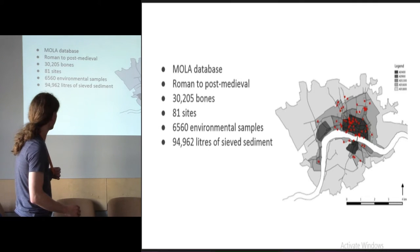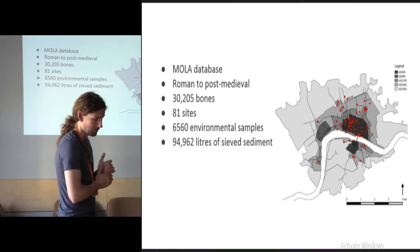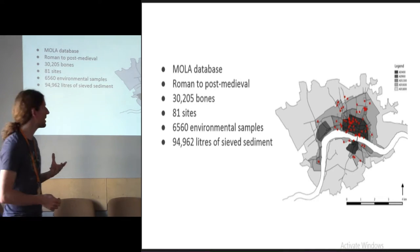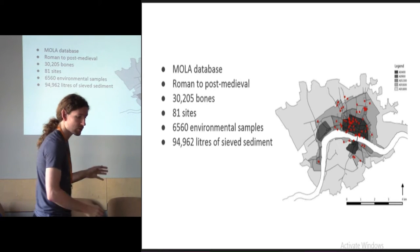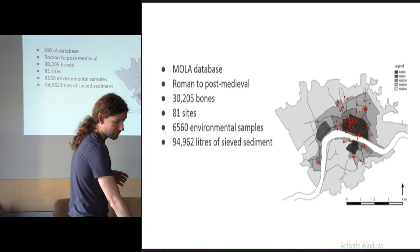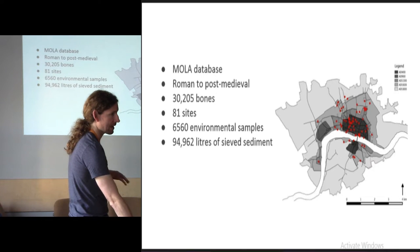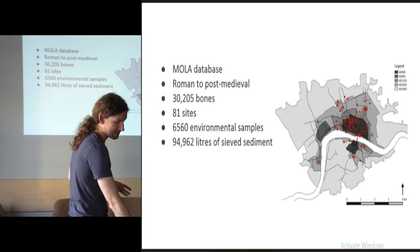The demonstration here involves the MOLA database and some fish bones. Fish bones from one of the biggest archaeological companies in London. It's a reasonable sized sample. 30,000 odd bones. 81 sites. 6,500 environmental samples. About 95,000 litres of processed sediment went into this. So it's not a bad sample.